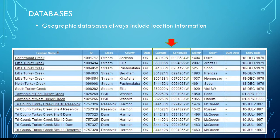Databases always include location information. See, on this chart, one aspect is latitude and another is longitude, that helps to pinpoint where the specific feature is located.